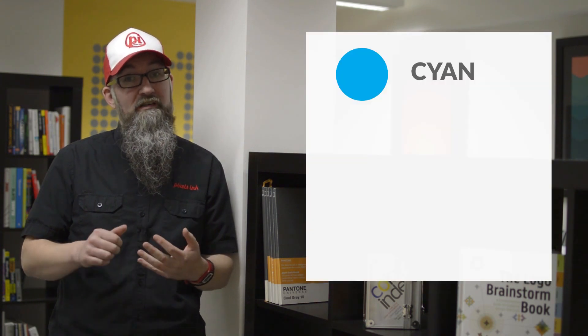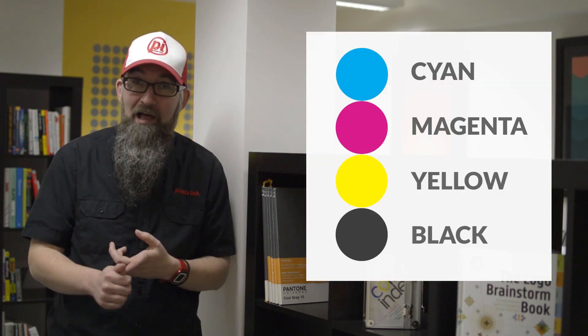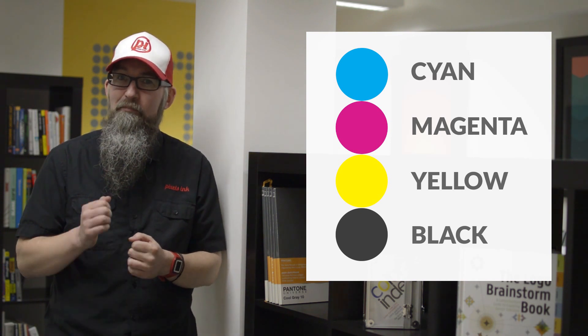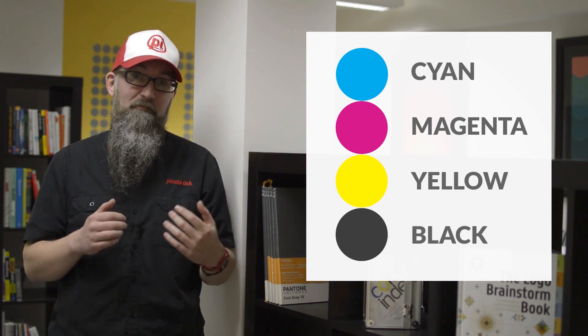Now CMYK stands for cyan, magenta, yellow and black. The reason the black has the letter K is that it comes from old printing terms, where K would be the key plate, and that would have all the details and information of the job at hand. So K represents black in this colour model.